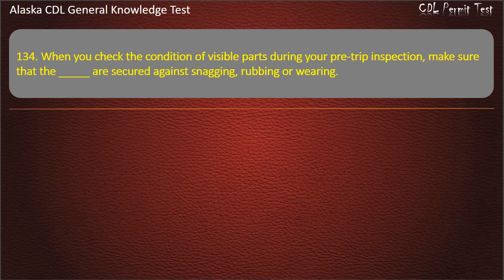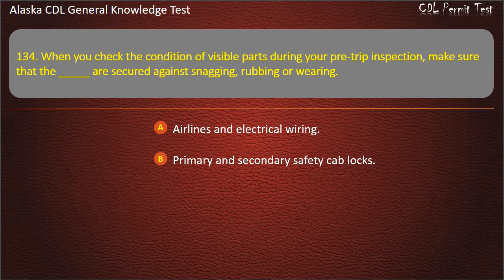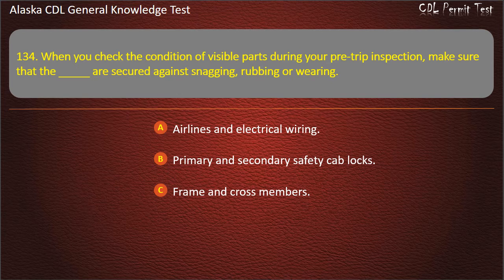Question 134. When you check the condition of visible parts during your pre-trip inspection, make sure that the airlines and electrical wiring are secured against snagging, rubbing or wearing. Answer: Airlines and electrical wiring.